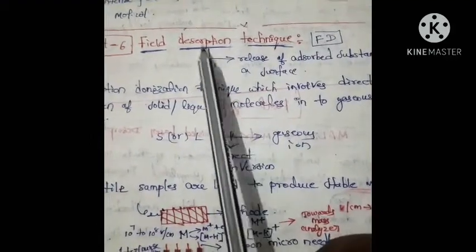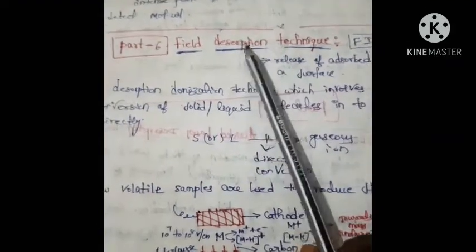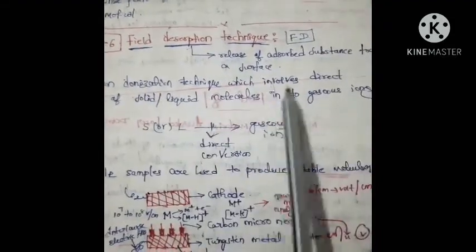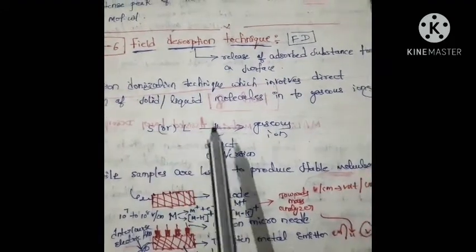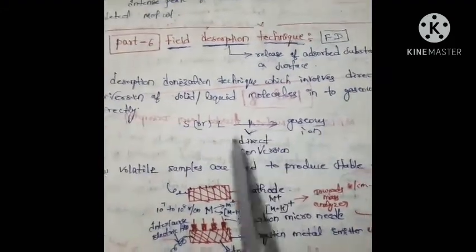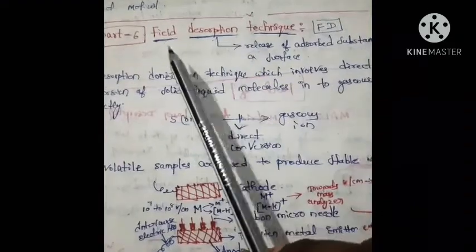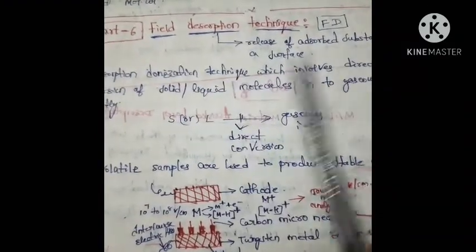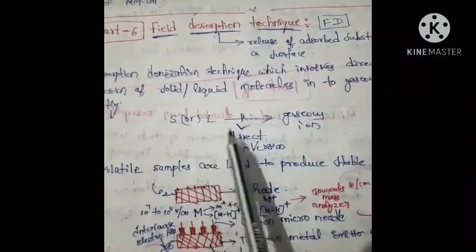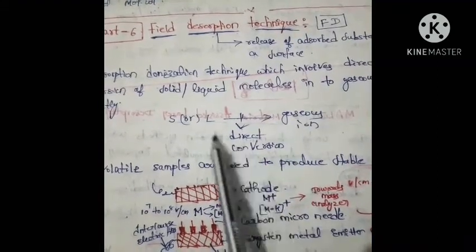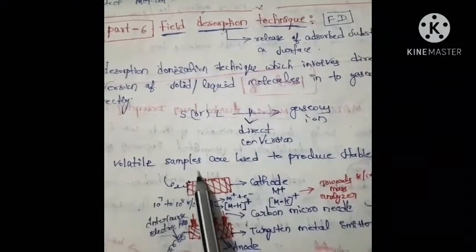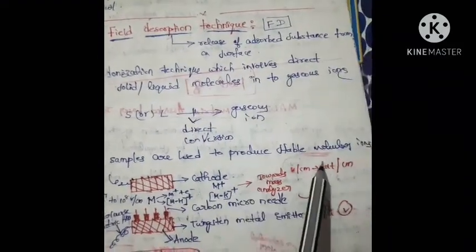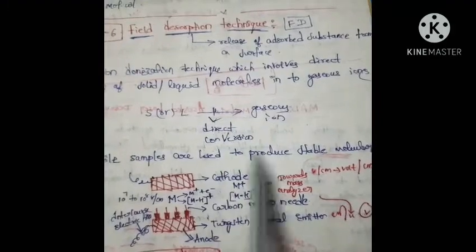This desorption ionization technique involves direct conversion of solid or liquid molecules into gaseous ions. So in the field desorption technique, solid or liquid directly converts into gaseous ions. Here volatile samples are used to produce stable molecular ions.